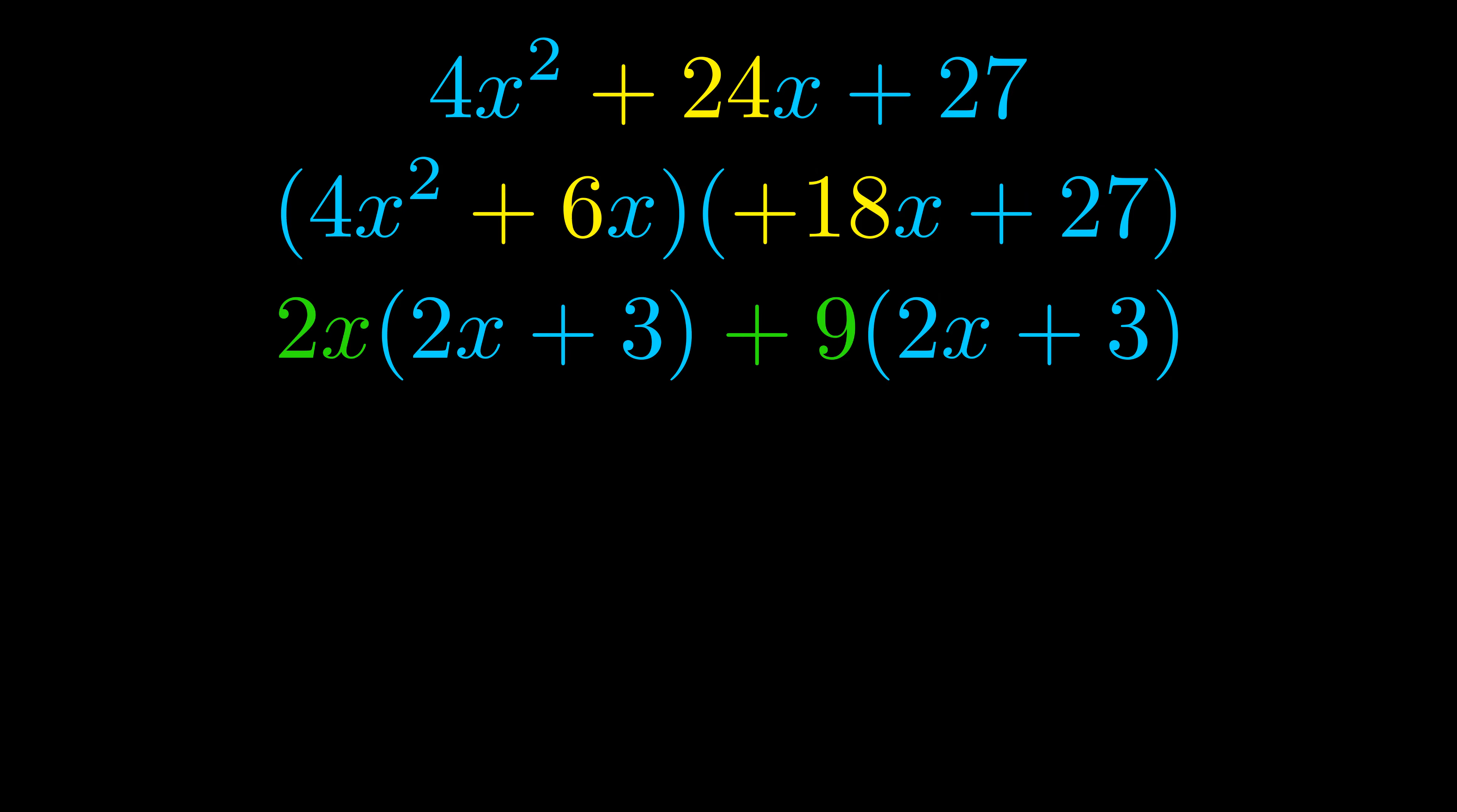Notice also how what remains inside of the parentheses is the same in both cases. The blue values are the same. Those blue values will become one of our factors and we will combine the two green values, the GCFs that we pulled out, to get the other one.